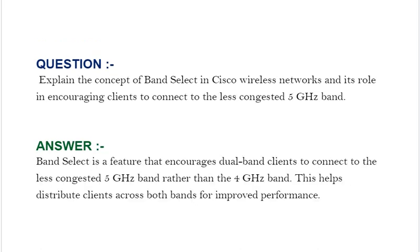Our next interview question is: explain the concept of band select in Cisco wireless networks and its role in encouraging clients to connect to the less congested 5 GHz band. Your answer should be: band select is a feature that encourages dual-band clients to connect to the less congested 5 GHz band rather than the 2.4 GHz band. This helps distribute clients across both bands for improved performance.